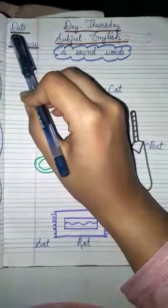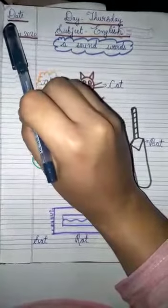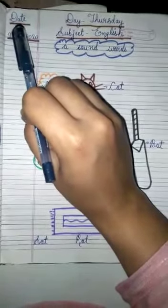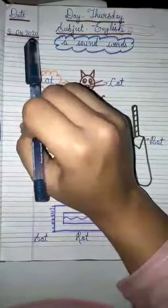Good morning everyone. Let us start with today's date. First of all, the spelling of date is D-A-T-E, date. And the date today is 9 April 2020.